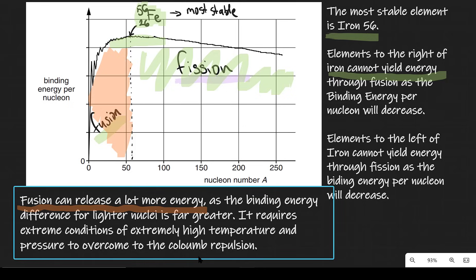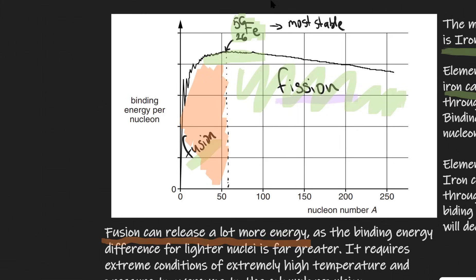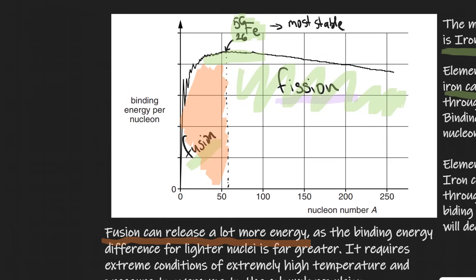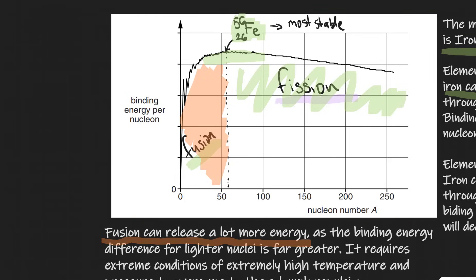Fusion can release a lot more energy as the binding energy difference for light nuclei is far greater — the graph changes considerably more on that side. It requires, though, some pretty extreme conditions including high temperature and pressure to overcome Coulomb repulsion. With induced nuclear fission, total binding energy increases as a heavy element decays into lighter ones. With fusion, binding energy also increases as lighter elements combine into a heavier one. In each case, delta E can be calculated using delta E equals delta mc squared.